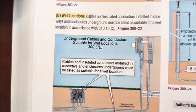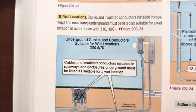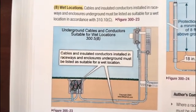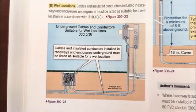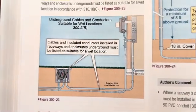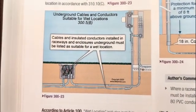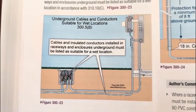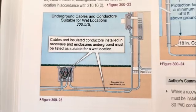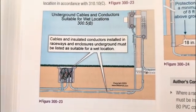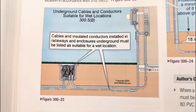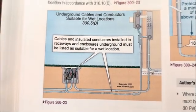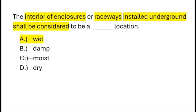Looking at 300.5(B) — wet locations — cables and insulated conductors installed in raceways or enclosures underground must be listed as suitable for wet locations in accordance with 310.10(C). So you can see that the enclosure interior must be rated for a wet location, as well as the conduit itself — the raceway. The interior of enclosures or raceways installed underground shall be considered to be a wet location.